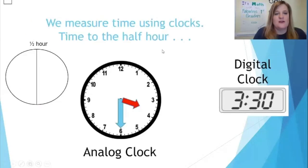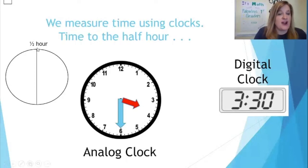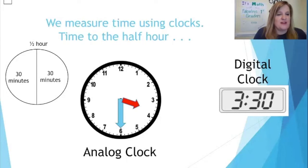We measure time using clocks. Now, we talked about how the analog clock is a circle shape, and the minute hand has to go all the way around one time for 60 minutes to go by. Today we're focusing on a half hour. If the whole circle is 60 minutes, then a half circle — thinking about fractions — is 30 minutes. So we have 30 minutes and 30 minutes.